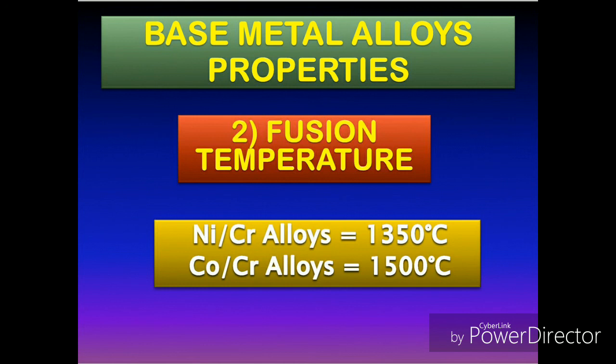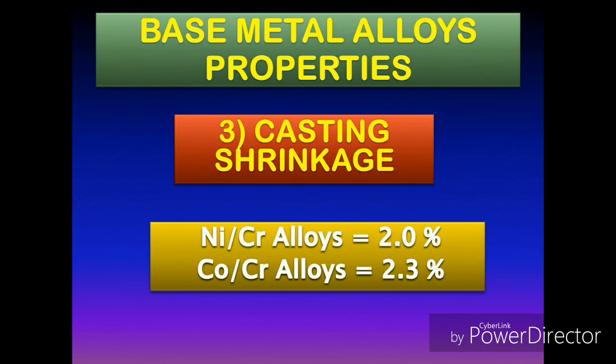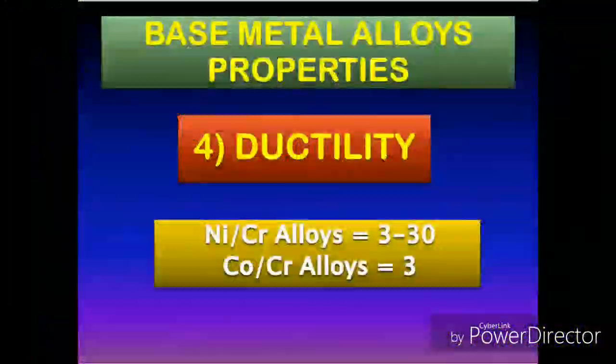So the cobalt-chromium base metal casting alloy has a slightly higher fusion temperature compared to the nickel-chromium. Comparing casting shrinkage, the nickel-chromium casting alloy has a casting shrinkage of 2%, whereas the cobalt-chromium casting alloy has 2.3%, so they are almost similar.